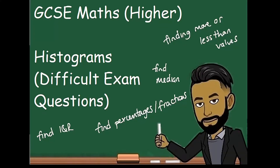Welcome to this latest video on 162MAT. In this video we'll be going over the higher GCSE topic of histograms, with a focus on some difficult exam style questions. By difficult exam style questions, this basically involves being asked to find values from the histogram that are either more than or less than a particular value, finding the median, finding the interquartile range, and finding percentages and fractions of frequencies.